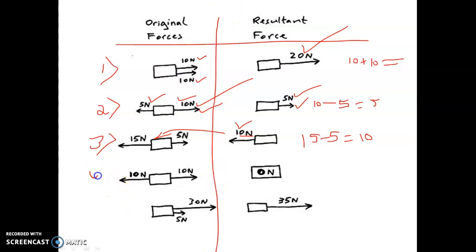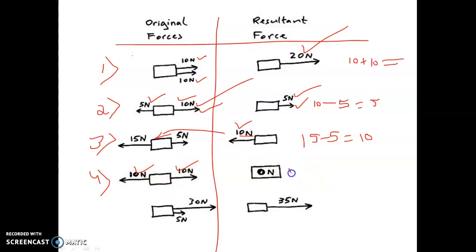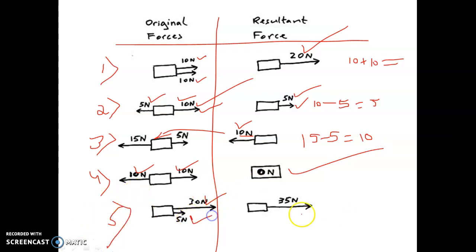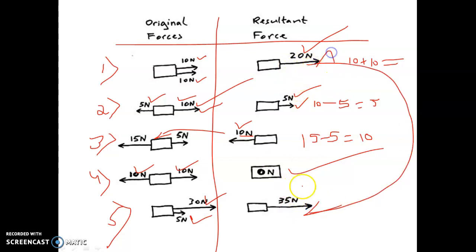Fourth case: 10 Newton and 10 Newton in opposite directions — resultant equals zero. When the object is stationary, there is no resultant force. Fifth case: 30 Newton and 5 Newton acting in the same direction — same as the first case. The resultant is 30 plus 5 equal to 35 Newton. These are the different cases for calculating the resultant of forces.